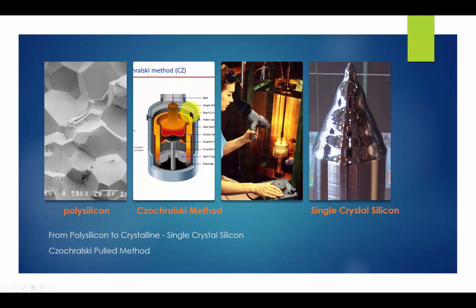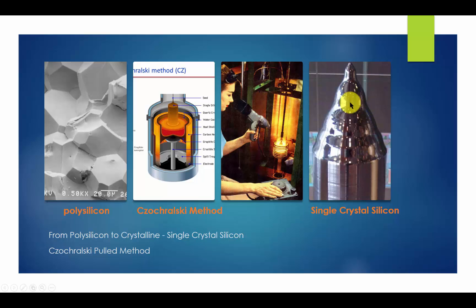The seed crystal is slowly rotated in the opposite direction to the rotation of the crucible and withdrawn from the melt. This allows more and more silicon to freeze out on the bottom of the growing crystal. The resulting large, cylindrical-shaped single-crystal silicon is typically 4 to 6 inches in diameter and 1 to 2 meters in length.